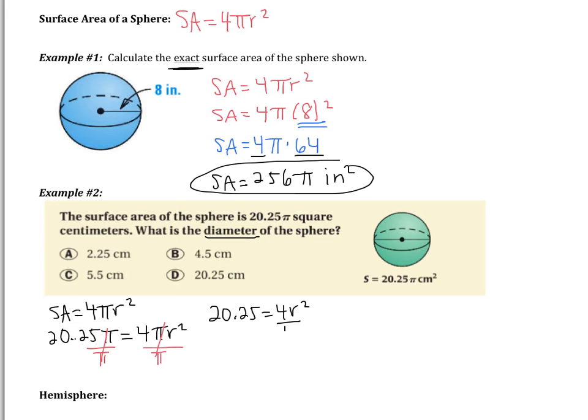I get 20.25 equals 4 r squared. Next, I'm going to divide both sides by 4. When I do that, I get 5.0625 equals r squared. Take the square root, and I get r equals 2.25. Now be careful here. The question asks us for the diameter. So this 2.25 is the radius.